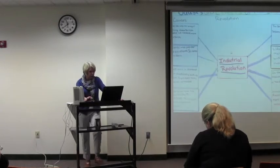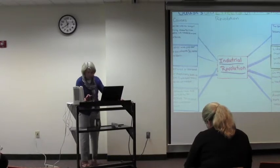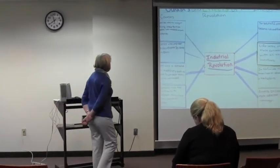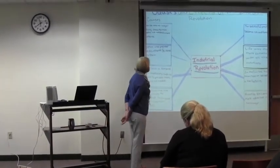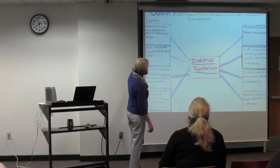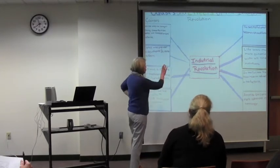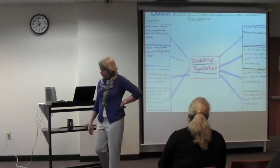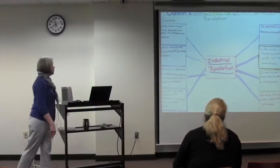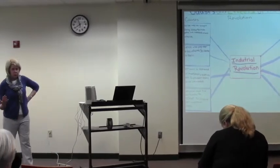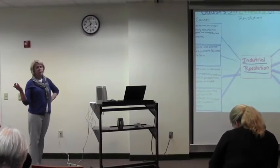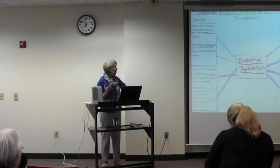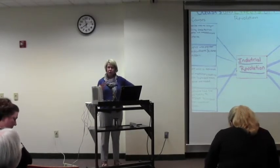Here in graphical representations, you can see this is a cause and effect map. We have causes leading to the industrial revolution and then the effects of the industrial revolution. That's done by a middle school student, possibly even a fifth grader. And there again, connections between concepts are very clear.